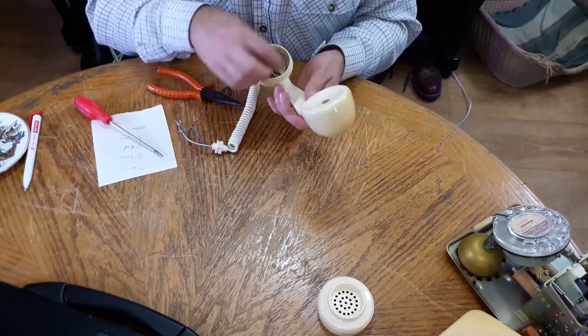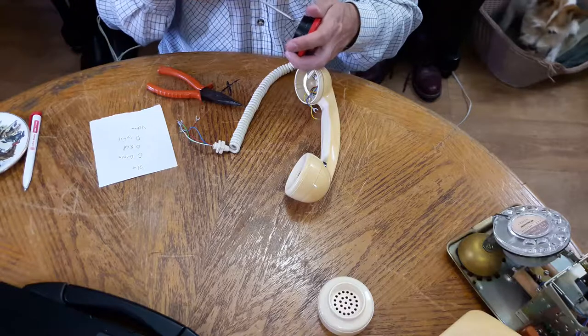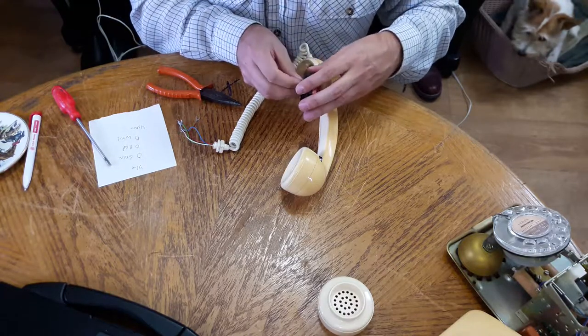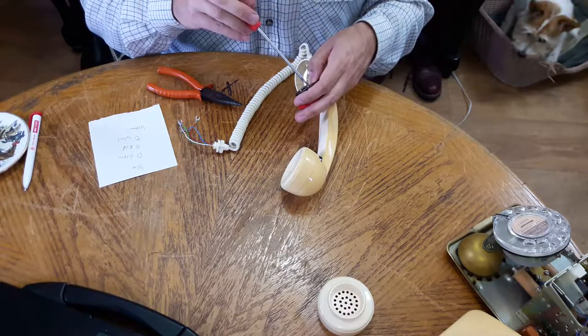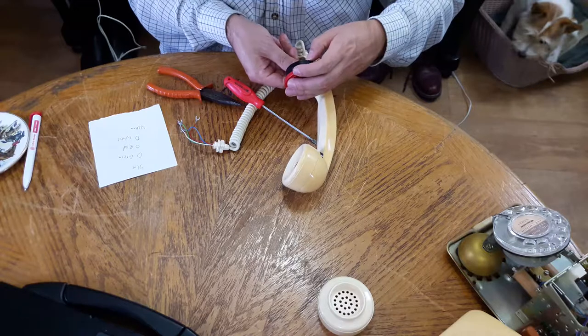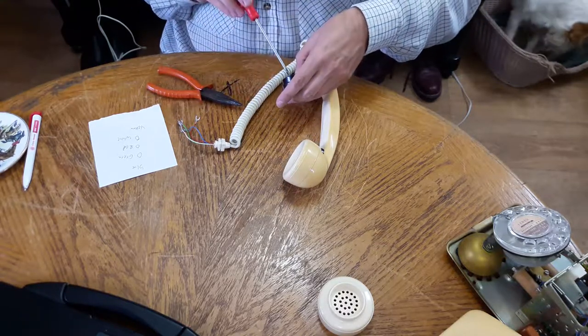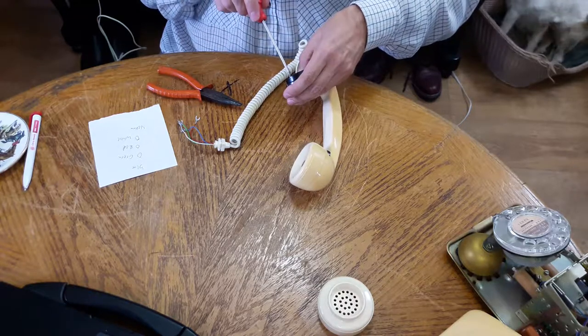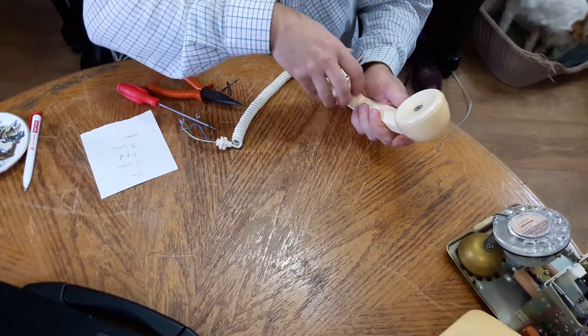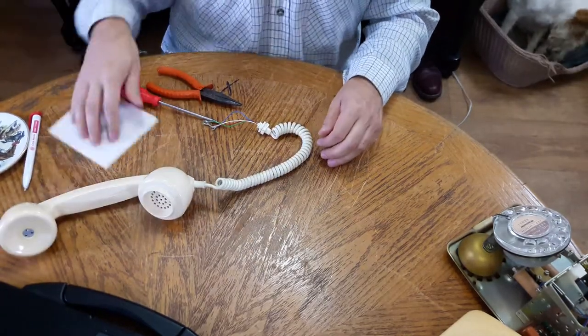So now what we need to do is connect our new electronic microphone. These electronic microphones generally aren't polarity sensitive, so it shouldn't matter what way we connect this. Now we've got that wired in correctly. We can drop the microphone in and screw that firmly in place. It's now starting to look like a phone again.